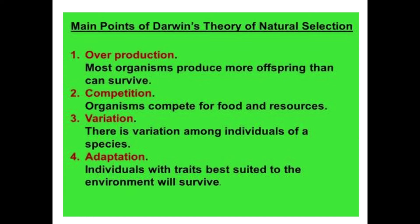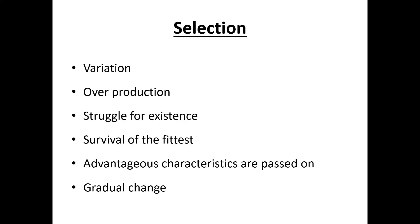Now we are going to go into natural selection. The most important things in Darwin's theory of natural selection include overproduction, competition, variation, and adaptation. Key concepts are: variations, struggle for existence, survival of the fittest, advantageous characteristics being passed on, and gradual change. One classic example of natural selection is the peppered moth.